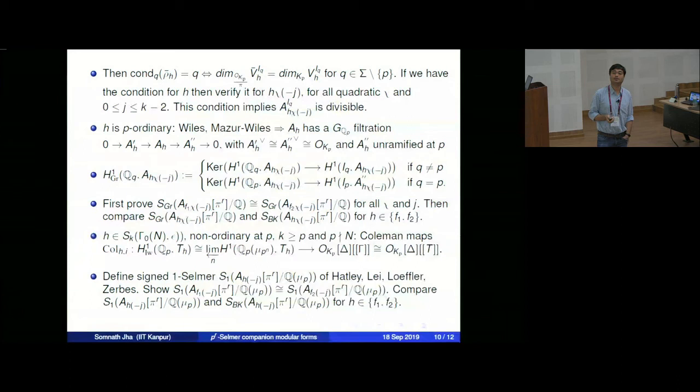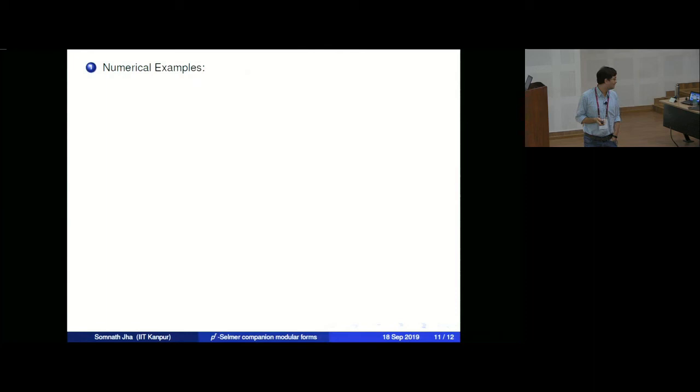The conditions like p ≥ k come from the machinery of the signed Selmer group and cannot be improved. Now for the last few minutes, I will discuss several numerical examples.